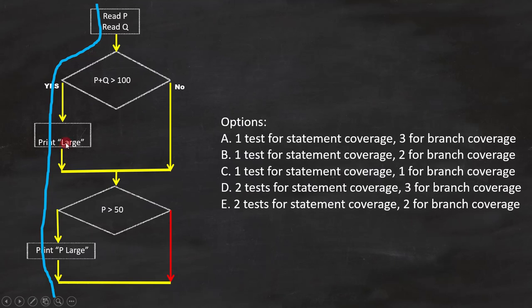Next is branch coverage. With this test case, only true part of the condition is covered. And to cover the false path we need one more test case. That means we need two test cases to cover the branch coverage.